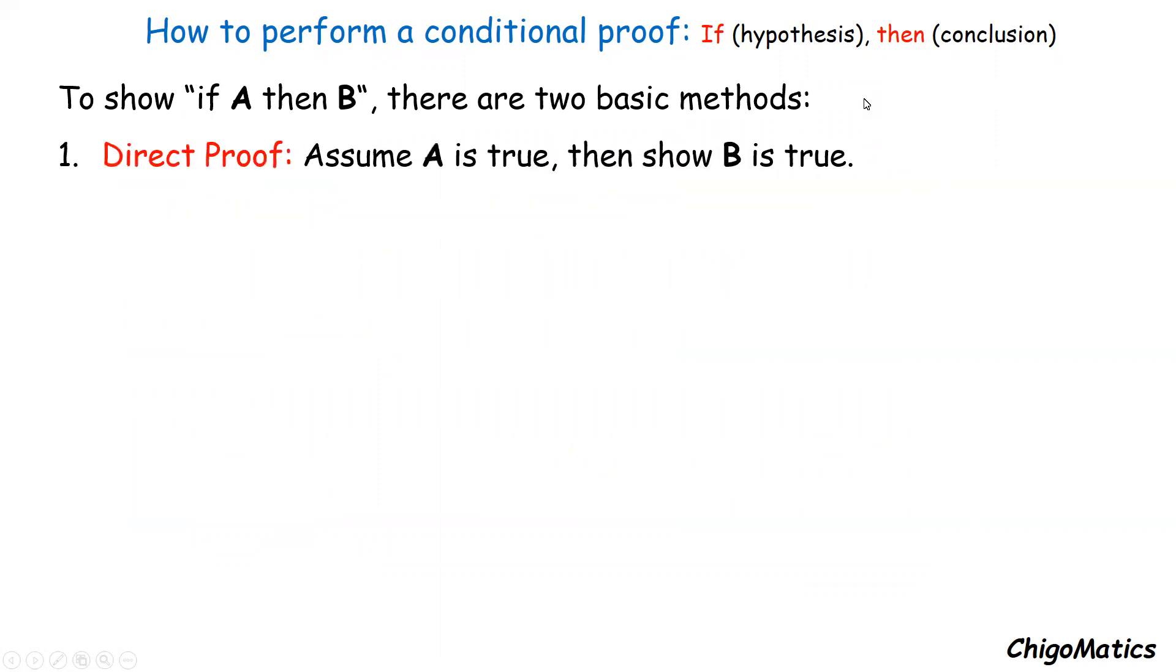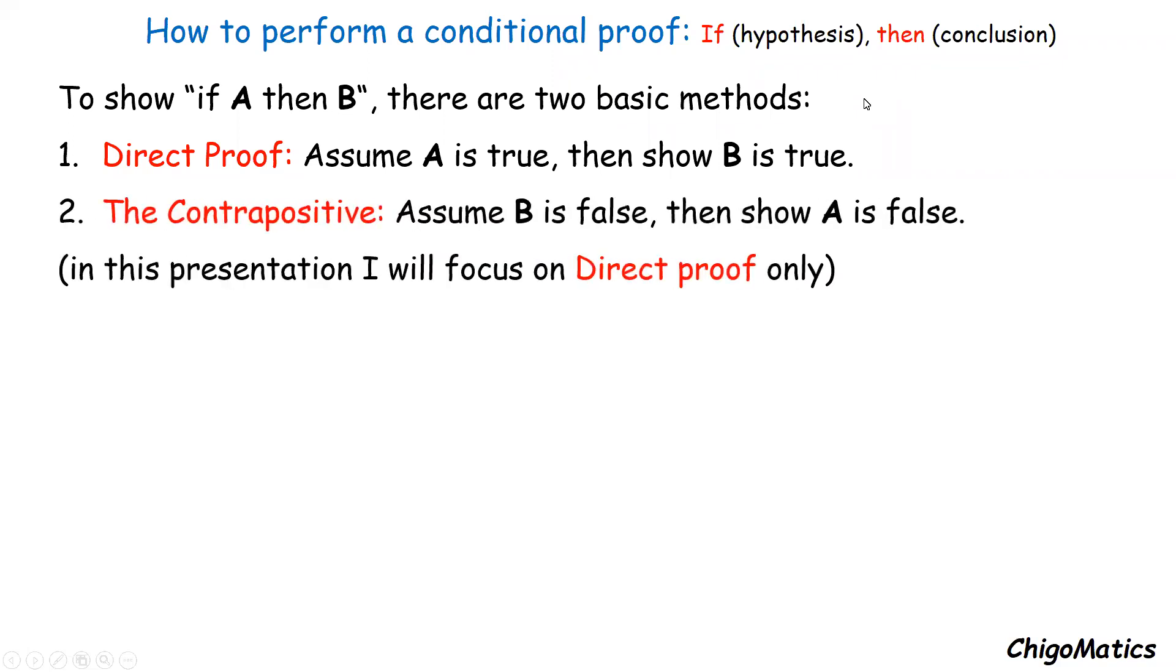Number one, direct proof: assume A is true then show B is true. Number two, the contrapositive: assume B is false then show A is false. In this presentation I will focus on direct proof only.